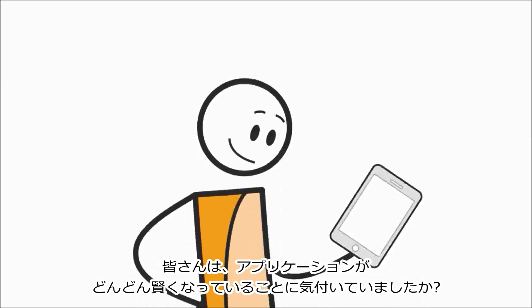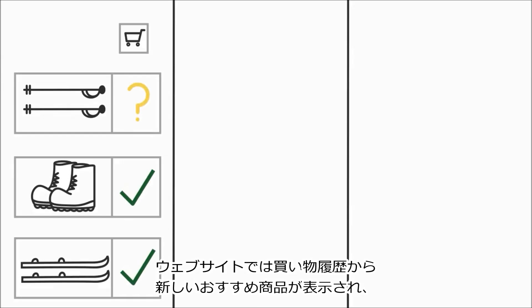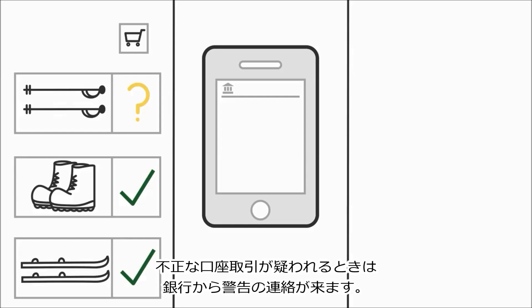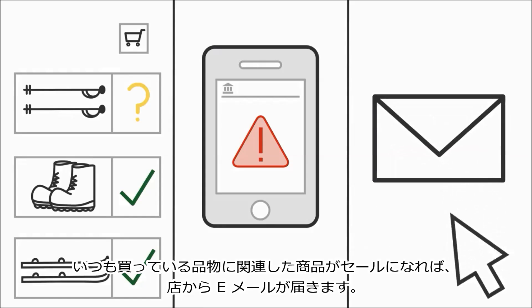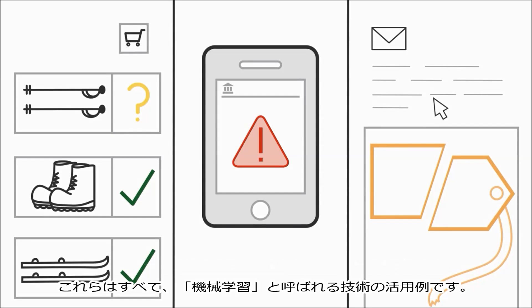Have you noticed how applications seem to be getting smarter all the time? Websites provide recommendations for new items based on past purchases. You get an alert from your bank if they suspect a fraudulent transaction. And you get emails from your favorite stores when items related to things you typically buy are on sale. All of these things are examples of ways you can use a technology called machine learning.